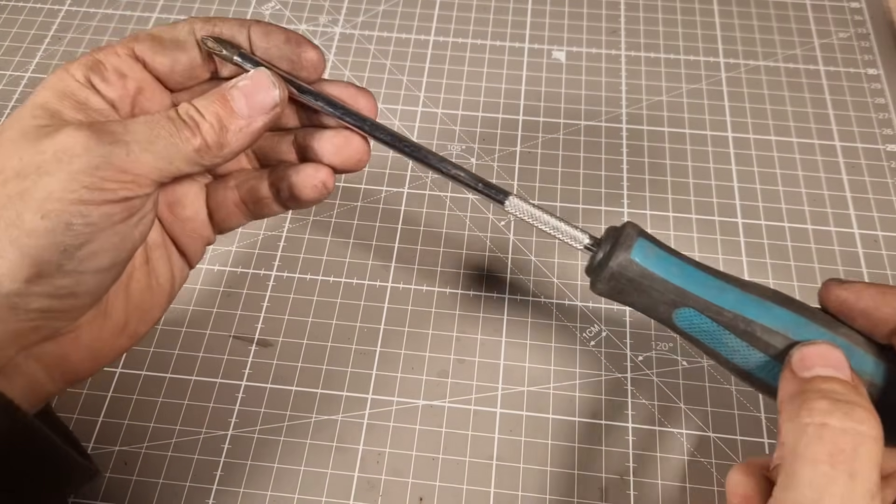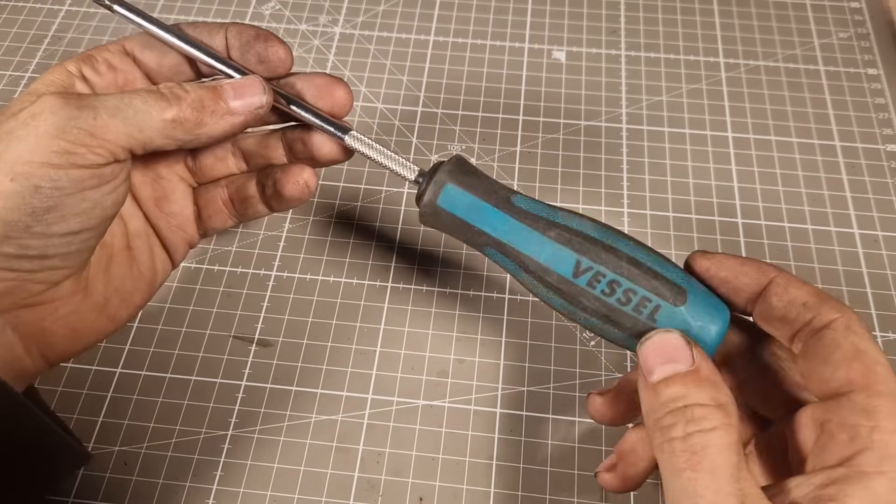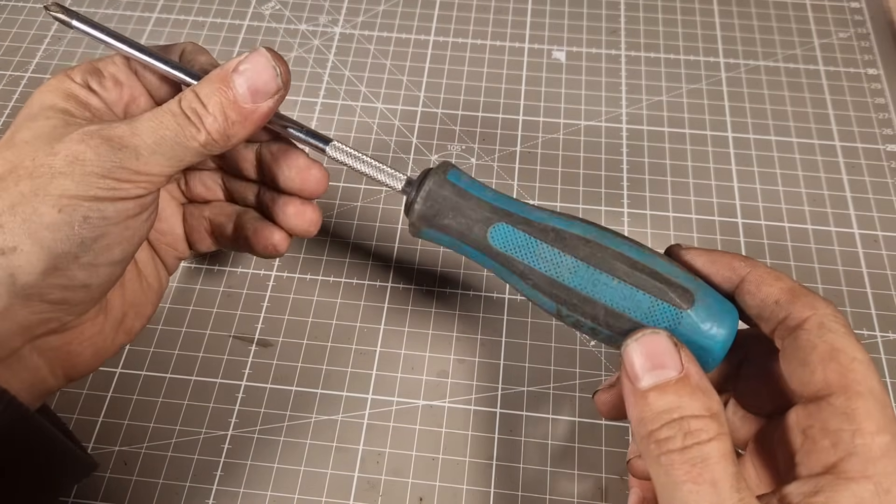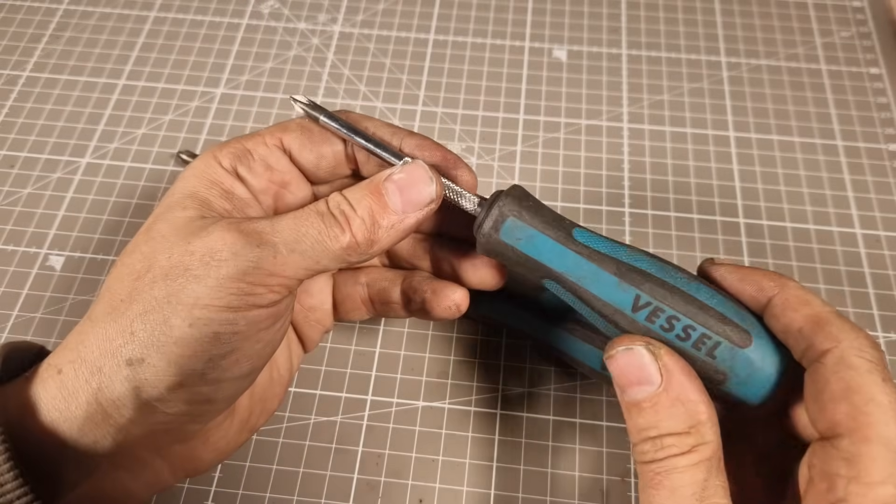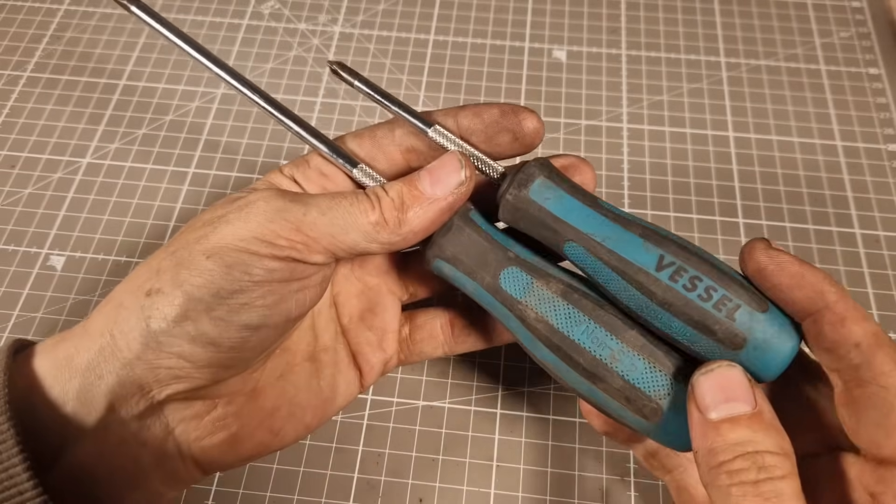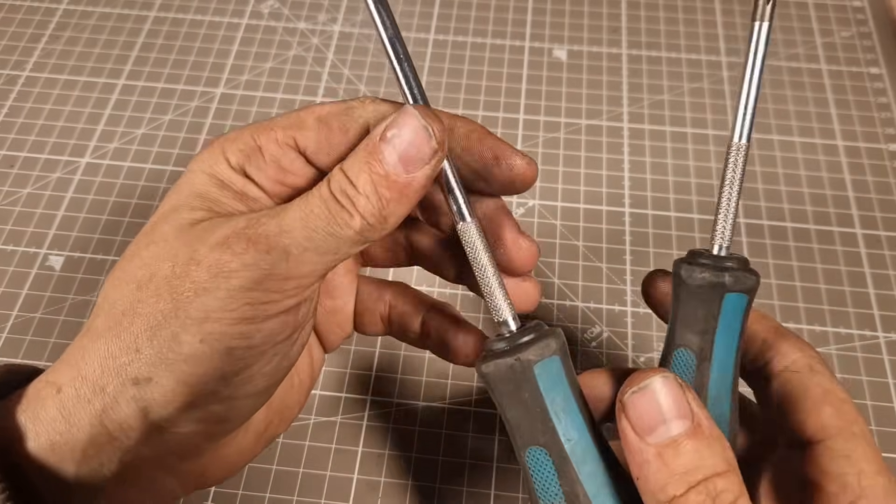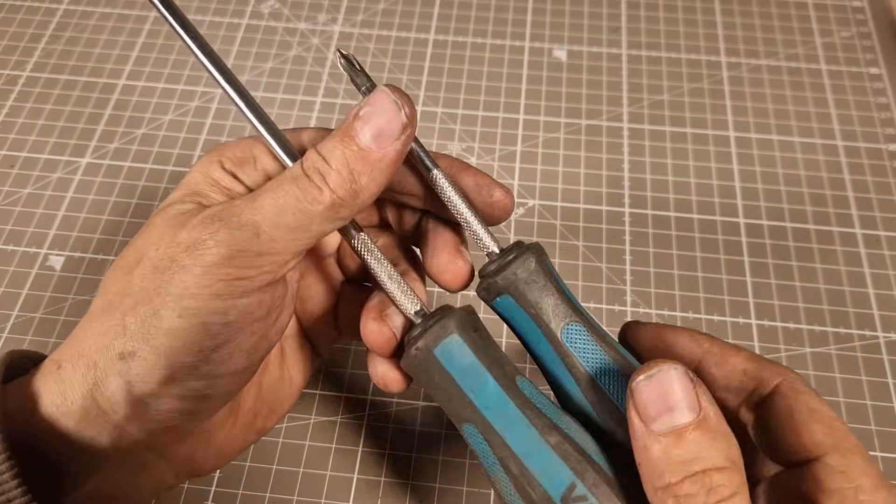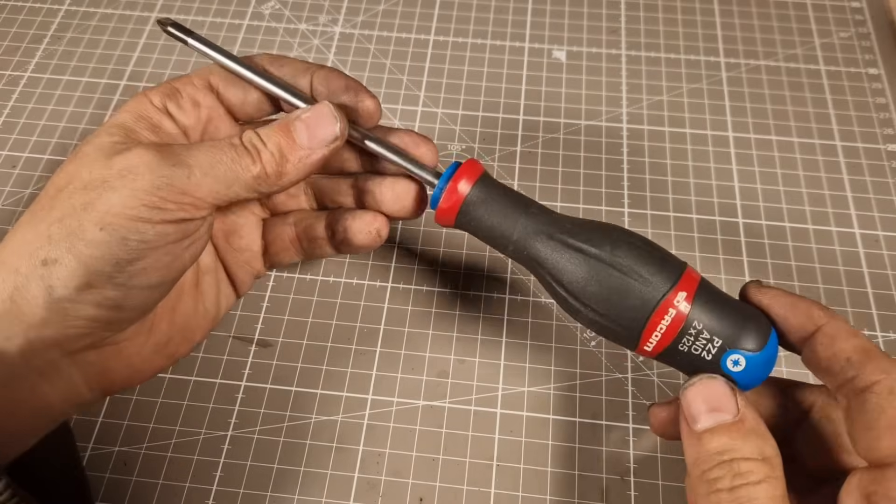Next one is Vessel stuff. If you want any JIS screwdrivers, these are the ones to go with, they're the nuts. There's a bigger one, here's a smaller one. The handles have held up pretty well. I just wish you had a hex block at the top, that would make them better.